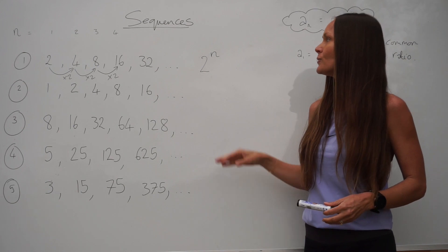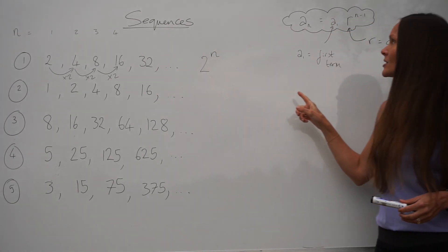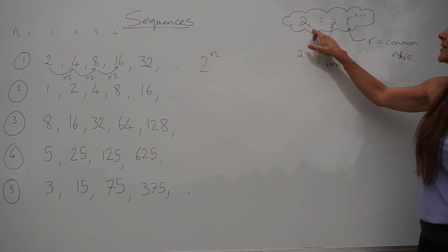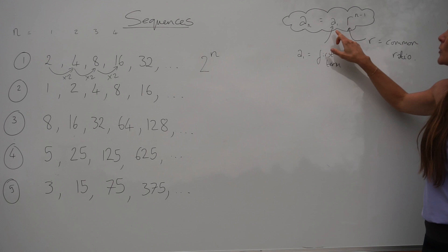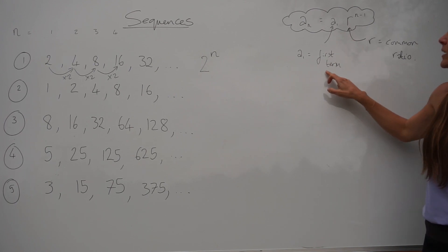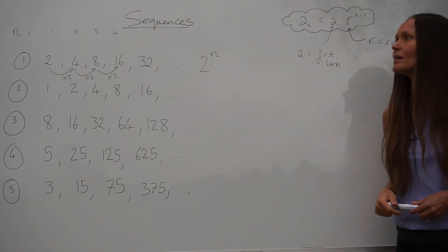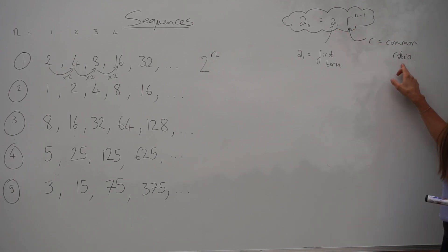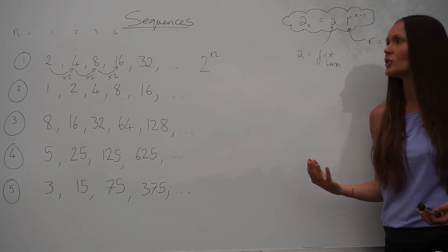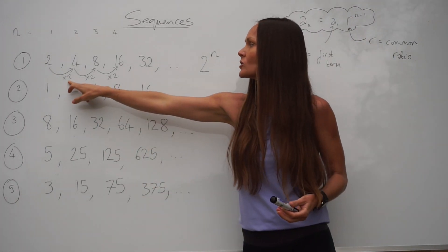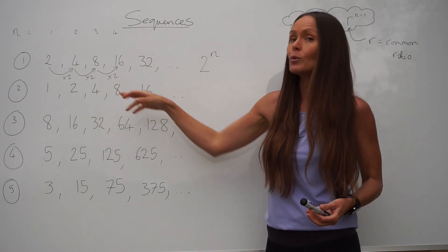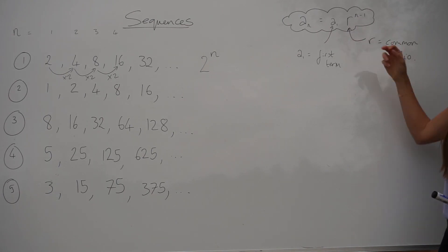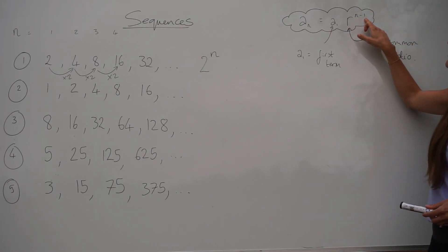I'm going to show you how to find the nth term using the general formula. The general formula is an — that just means the nth term — is equal to a1. a1 is the first term in the sequence, so the first number in your sequence. And then you multiply that by r, which is the common ratio. The common ratio is the number that you're multiplying by each time, so in question 1 it would be positive 2. And then you raise the common ratio to the power n minus 1 — the power is always n minus 1.